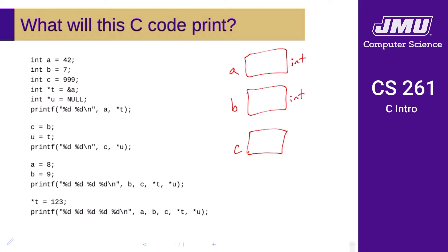The part inside the rectangle is the only thing actually stored in the system. The names are just labels, and the types are just information about those spots in memory. We initialize a to 42, b to 7, and c to 999. It's important to note that the only things actually stored in memory are the values — the things inside the boxes — but we track names and types to help trace through the code.